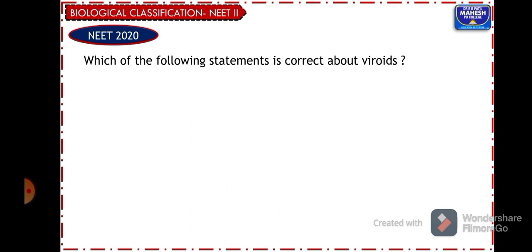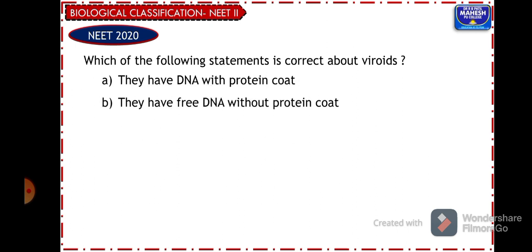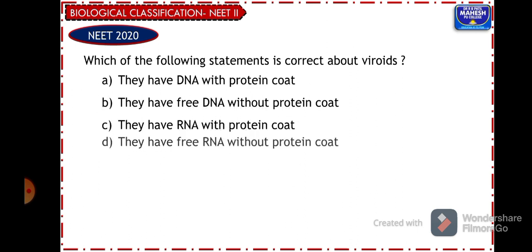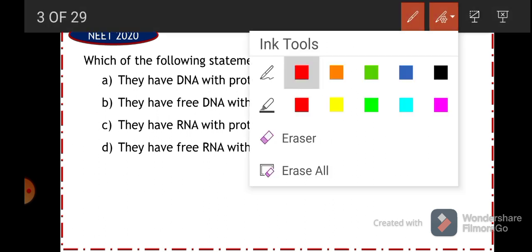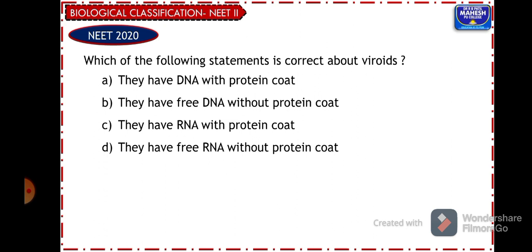The question is: which of the following statements is correct about viroids? The options are: they have DNA with protein coat; they have free DNA without protein coat; they have RNA with protein coat; they have free RNA without protein coat. Viroids are smaller, minute particles smaller than viruses. These particles have just a genetic material present in them — they do not have a protein coat. So the answer should be either option B or option D.